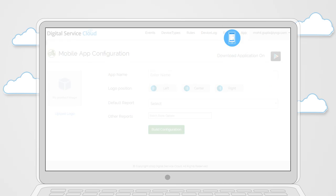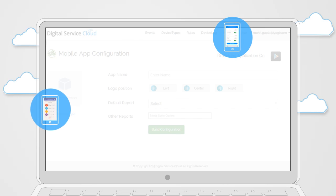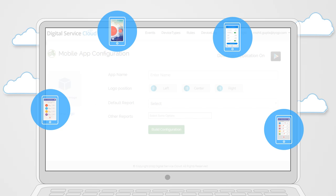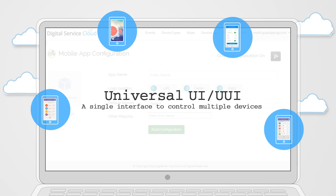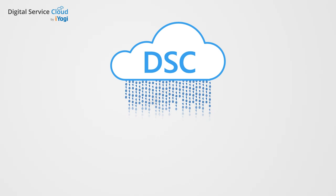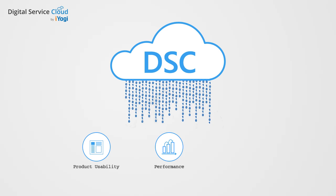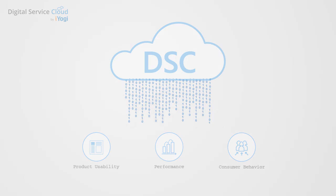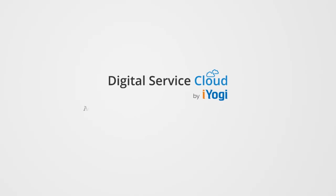Your app then becomes part of a single user interface — what we call the Universal UI, or the UUI. Once everything is set up, you can stream real-time data to monitor product usability, performance, and consumer behavior. Get started with Digital Service Cloud today.